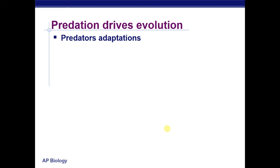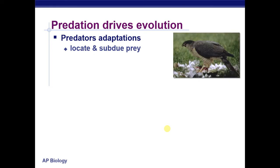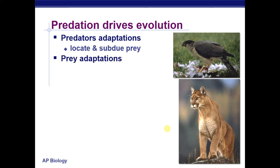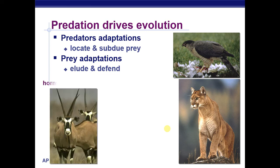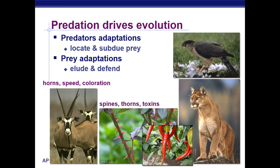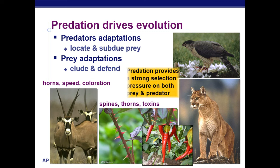Now we want to look more closely at predation. Predation drives evolution. Predators adapt to be able to locate and subdue their prey — think about how a hawk is so exquisitely adapted to be a hunting bird. And prey adapt to be able to elude predators and defend themselves. Look at organisms of the savanna with their horns, great speed, and coloration. Even in plants there are spines, thorns, or irritating substances like those in chili peppers. Predation provides one of the strongest selection pressures for both predators and prey because it's literally a matter of survival.